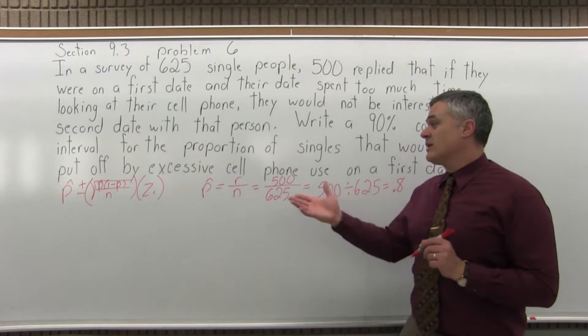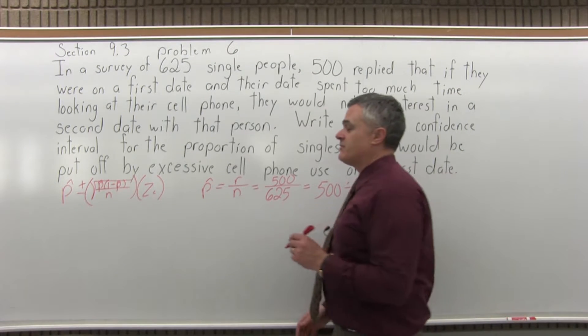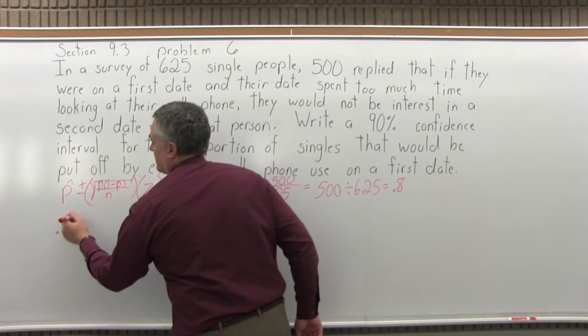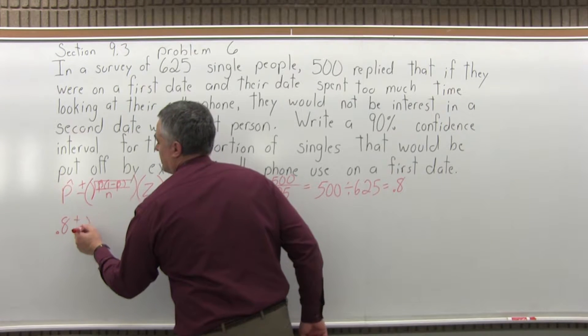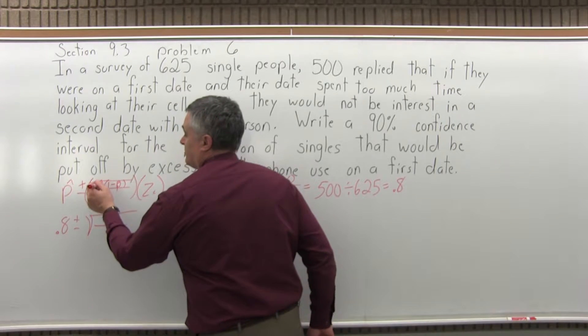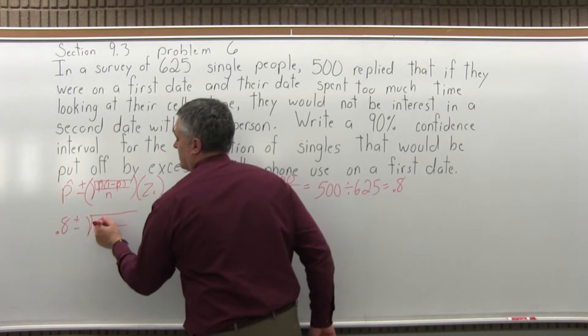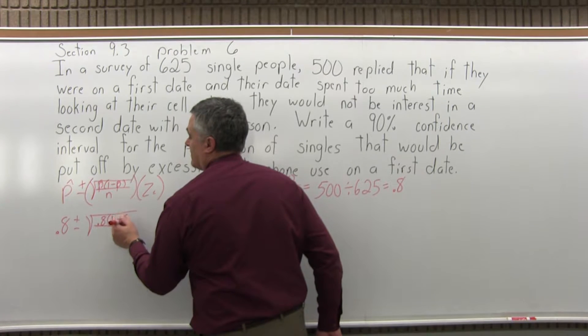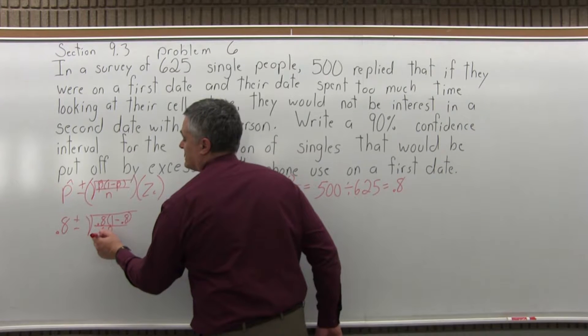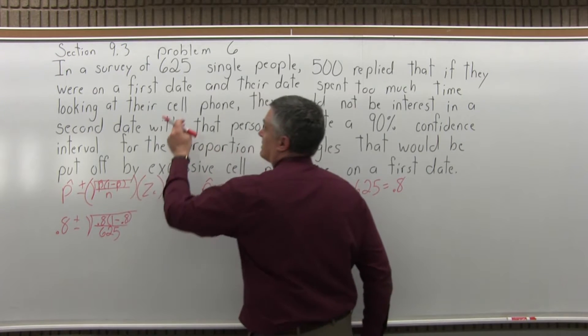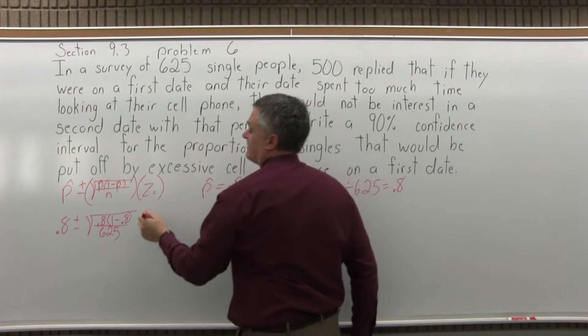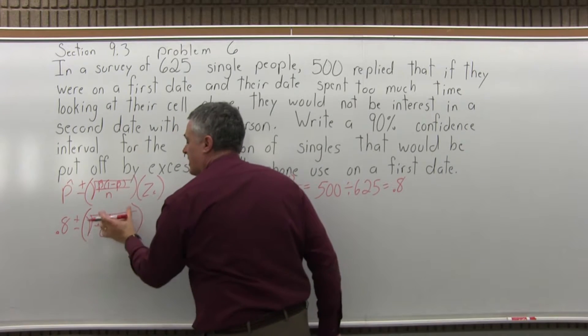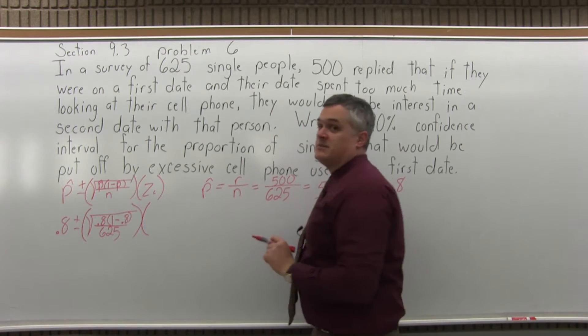So now that I know p hat is 0.8, I can go ahead and fill in most of my formula. So p hat is 0.8, plus or minus the square root of p hat, so 0.8, times 1 minus p hat, 1 minus 0.8, over n. n is the size of the sample, so for this particular problem, that's 625. And all of that's under the square root. The 625 is part of what's under the square root.